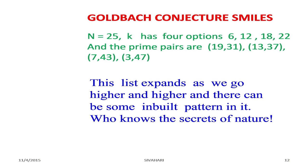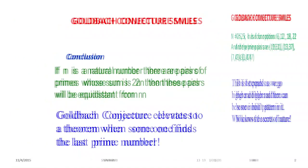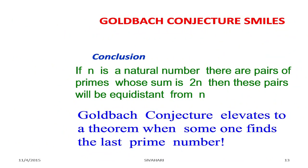So this list expands as we go higher and higher, and there can be some inherent patterns in it. Who knows the secrets of nature? Conclusion: if n is a natural number, there are pairs of primes whose sum is 2n, and these pairs will be symmetric around n.